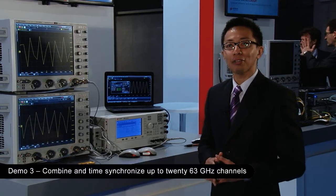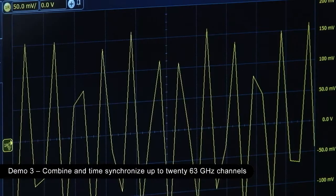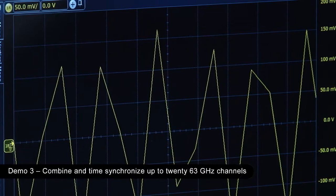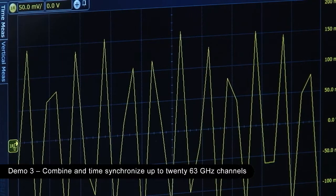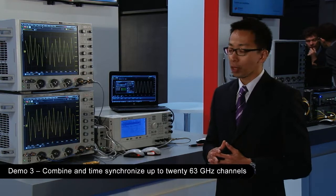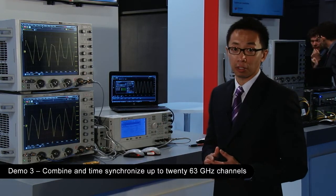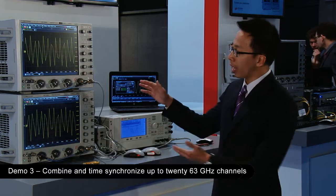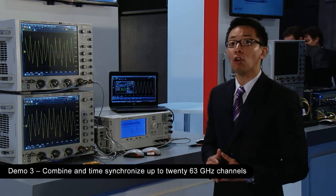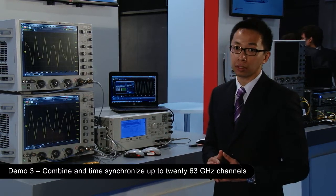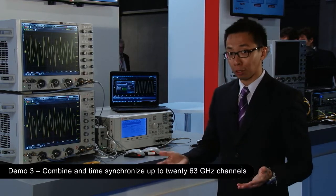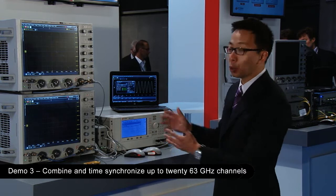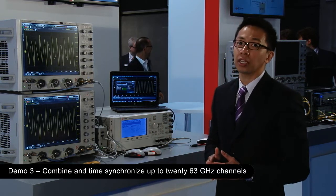In the third and final demo, what I want to show you is the multi-scope application. Multi-scope is needed when you need a higher channel count of more than 4 channels. So in this case, we have two Z-series oscilloscopes that we combine to achieve 4 channels at 63 GHz. And of course the multi-scope allow you to combine up to 10 oscilloscopes, so you can really get to 20 channels of 63 GHz.